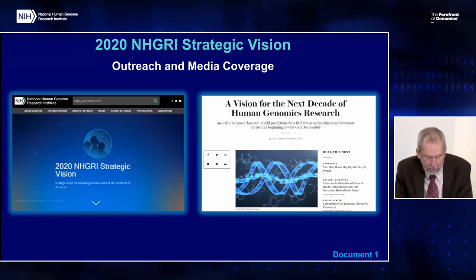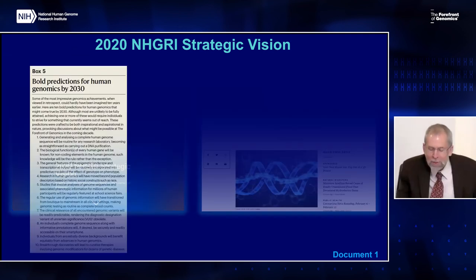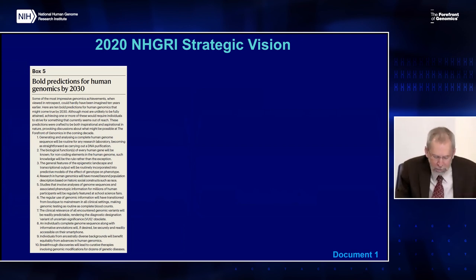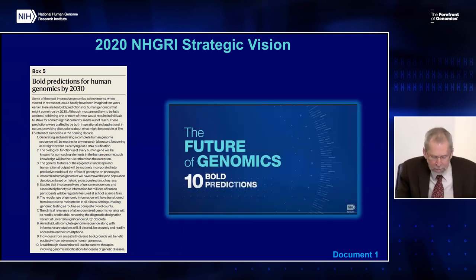The media became particularly excited about the last component of the 2020 NHGRI strategic vision: the 10 bold predictions for human genomics by 2030. I was repeatedly asked about these predictions in interviews more than any other aspect of the strategic vision. That focused attention on the bold predictions was actually anticipated by our communications staff when they were developing their suite of ideas for promoting the strategic vision.